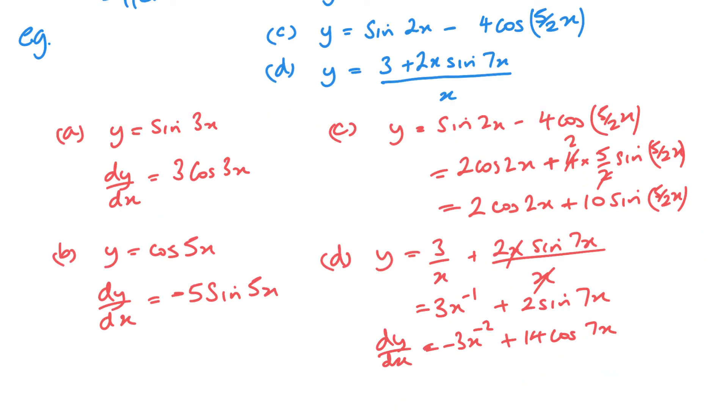And finally, I can write this as minus 3 over x squared plus 14 cos 7x. Or a better way would be to put the 14 cos 7x first, minus 3 over x squared. But any of these ways, starting from this initial line here, would be correct.